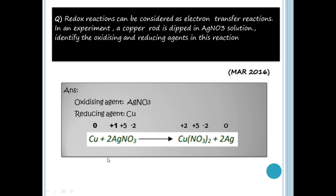Cu goes from 0 to +2 — it is oxidized, so Cu is the reducing agent. Ag goes from +1 to 0 — it is reduced. Therefore, Ag is the oxidizing agent.